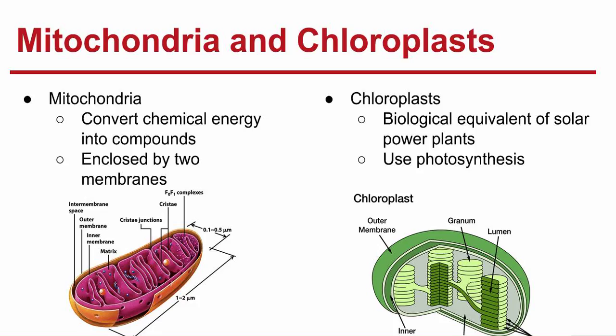Next we have the mitochondria and the chloroplasts — the energy source for the factory. Mitochondria are contained in nearly all eukaryotic cells, including plant cells. They are organelles that convert the chemical energy stored in food into compounds that are more convenient for the cell to use — converting carbohydrates down into simple sugars. They're enclosed by a dual membrane system, the outer and inner membrane. Mitochondria are passed down from the ovum or the egg, meaning all the mitochondria in your body are passed down from your mother.